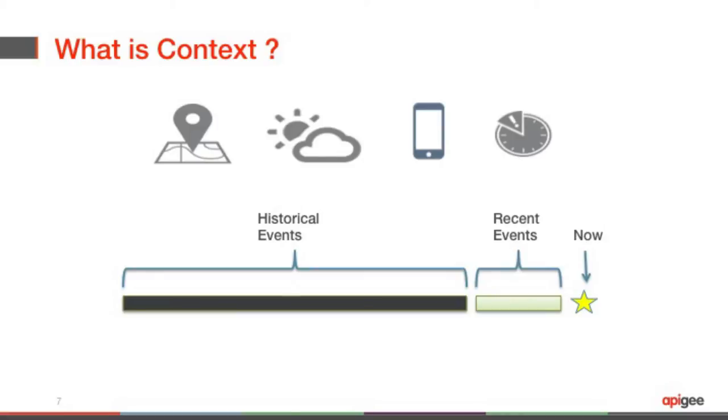And then you have what's happening right now. You need to take in all these pieces of information together to give a result. The reason we're splitting up these events is because you need different technologies and architectural patterns to deal with all three types of events and merge them to give a good answer. Context-aware apps include things like webpages with shopping recommendations, Google Maps saying there's a gas station near you, push notifications, email outreach, and in-app recommendations.